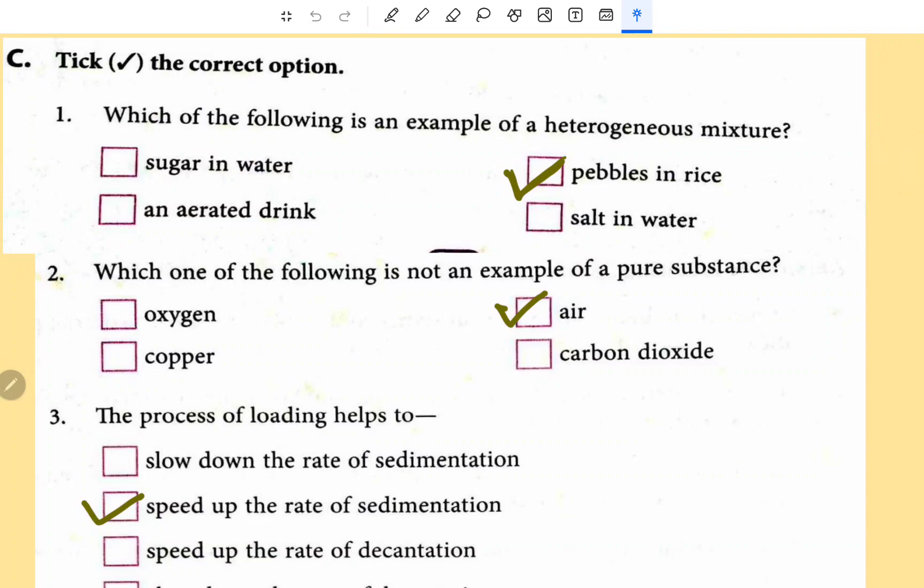Next is tick the correct option. Which of the following is an example of heterogeneous mixture? This is pebble in rice. Which of the following is not an example of a pure substance? That is air. The process of loading helps to speed up the rate of sedimentation.